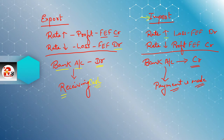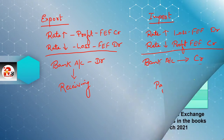If rate increases, there will be loss, and the FEF account will be debited. If rate decreases, there will be profit, and the FEF account will be credited. In import, the bank account will always be credited. Why? Because we are going to make the payment — since we are doing the payment, the bank account will always be credited.